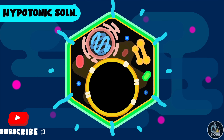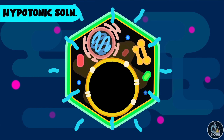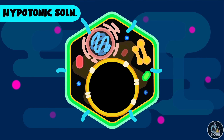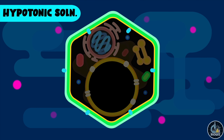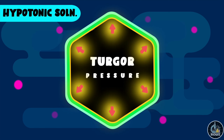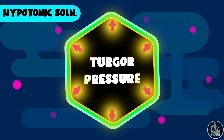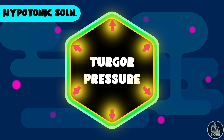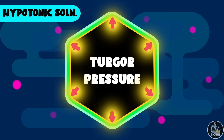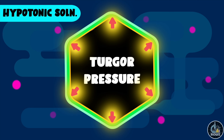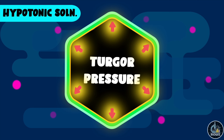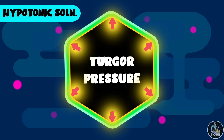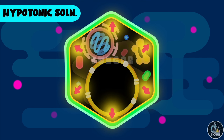As the water moves inside the cell, the volume of its protoplast increases. Due to this increase in volume, the protoplast exerts a pressure on the cell wall in the outward direction.